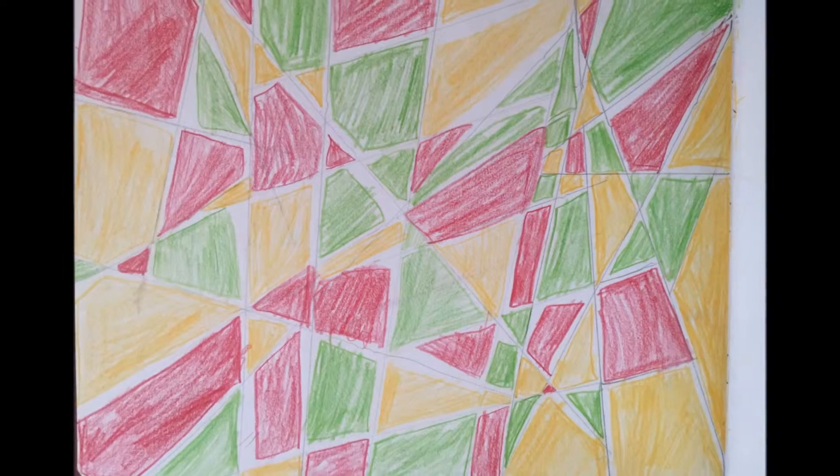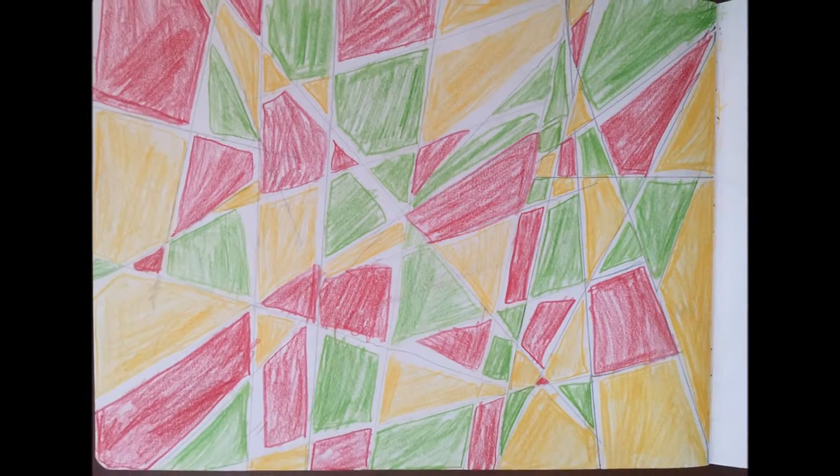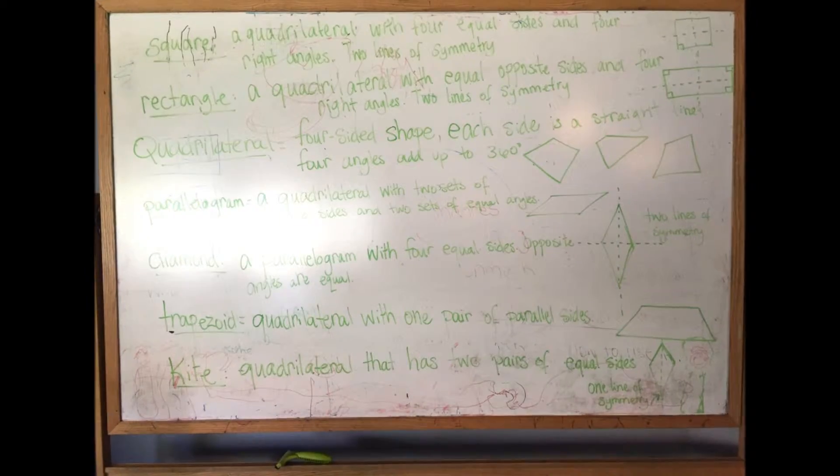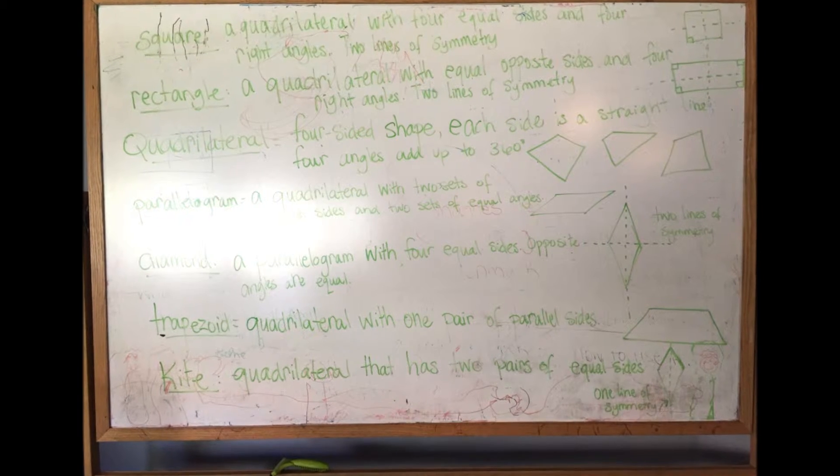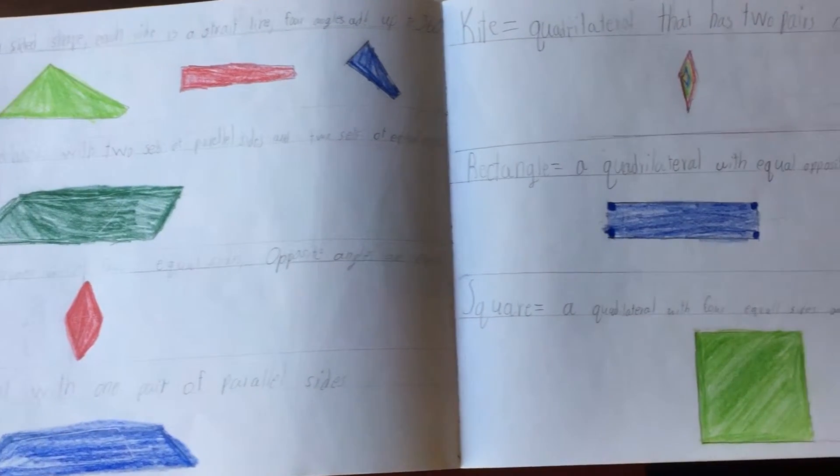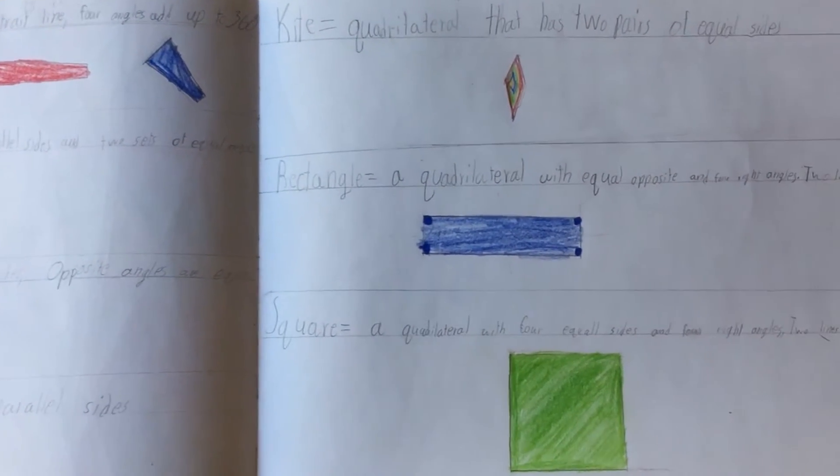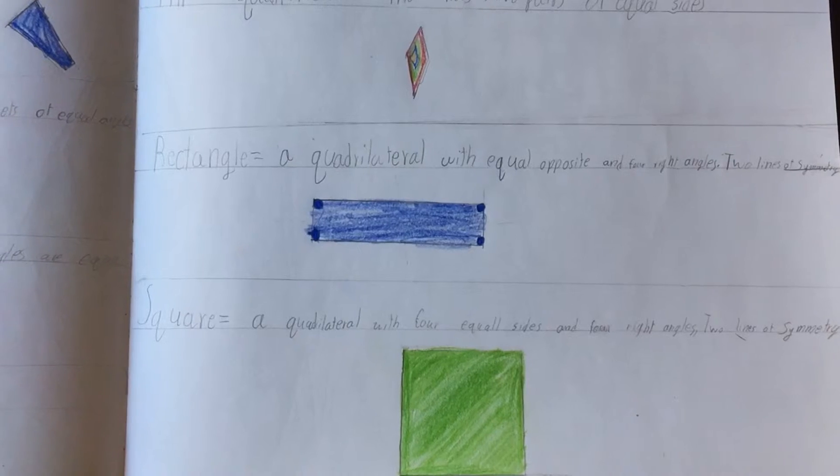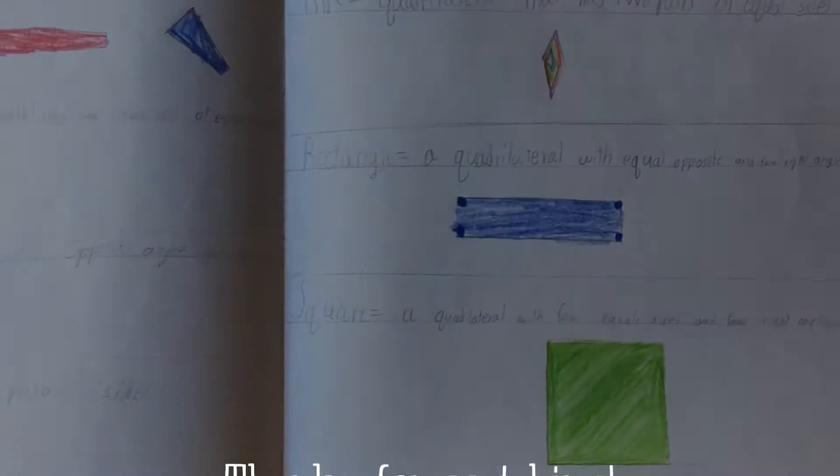And then my son does his and it looks beautiful. I really love the colors that he chose. But then I decide that I need to write down all the names of the quadrilaterals and a little bit about each one and then draw an example. And so then he included that in his main lesson book, even though that wasn't part of my lesson plan. Okay guys, thanks for watching.